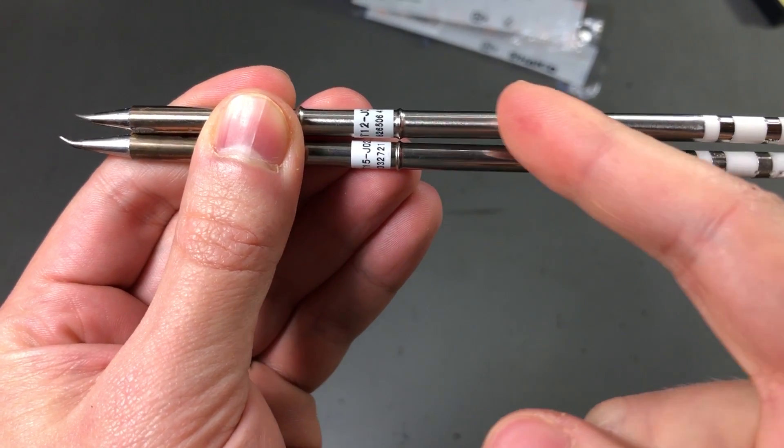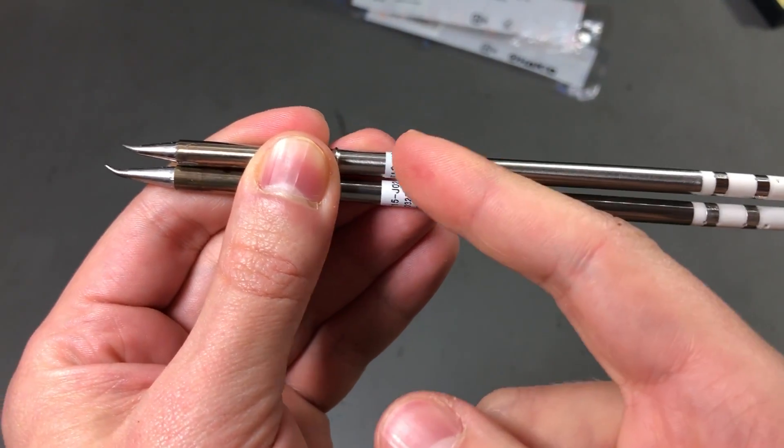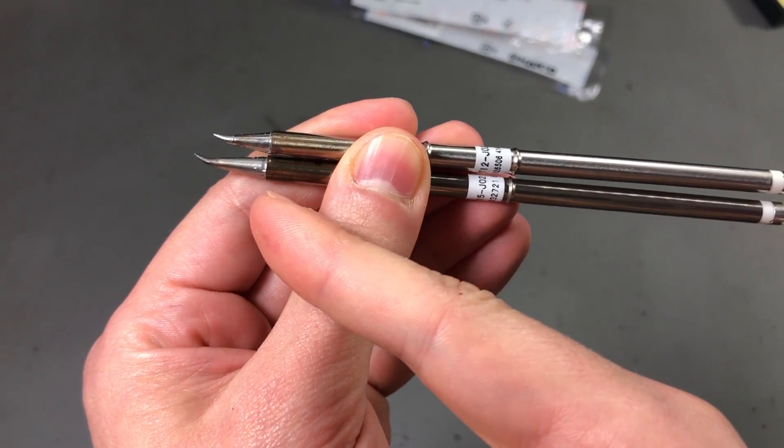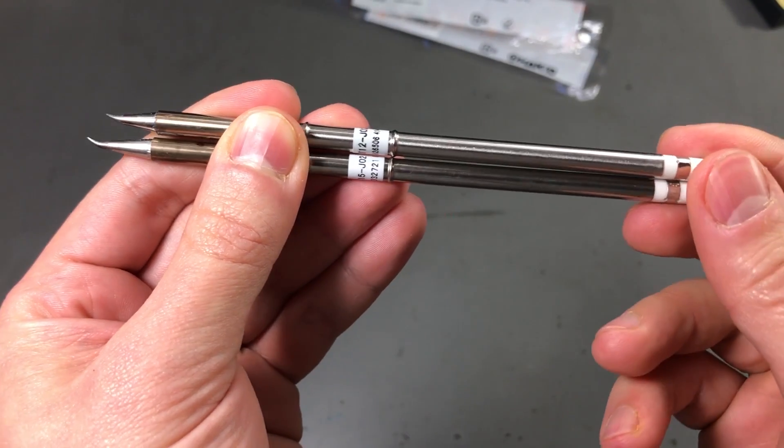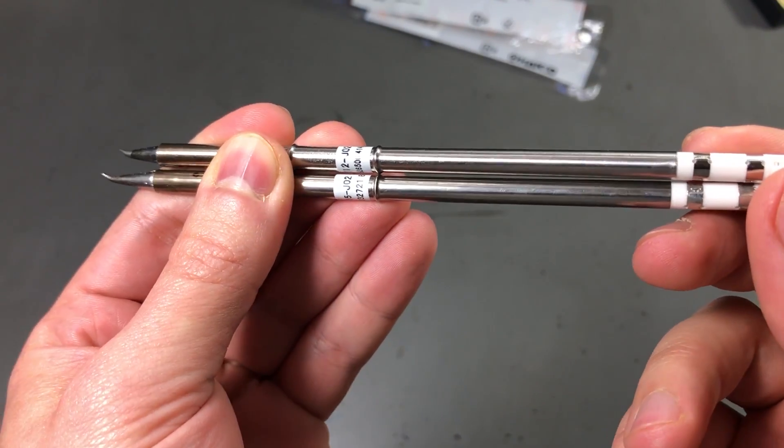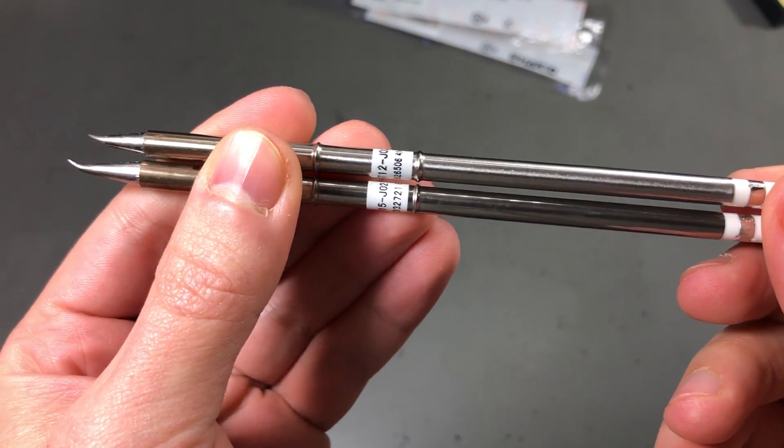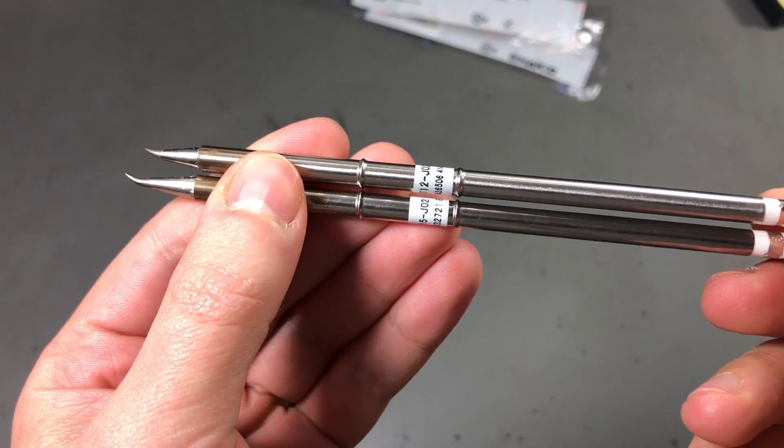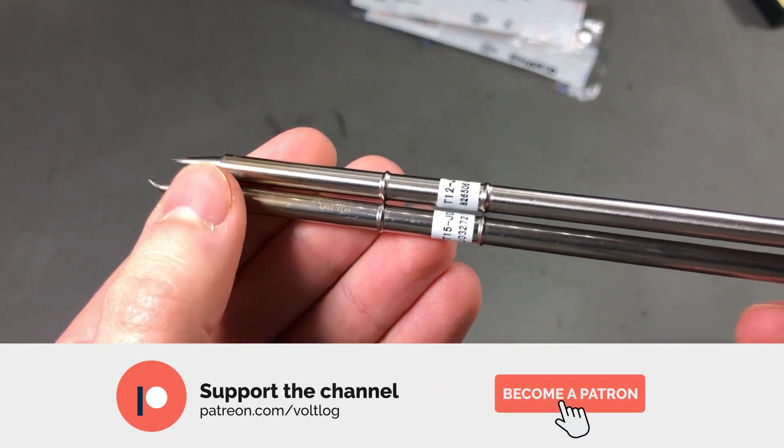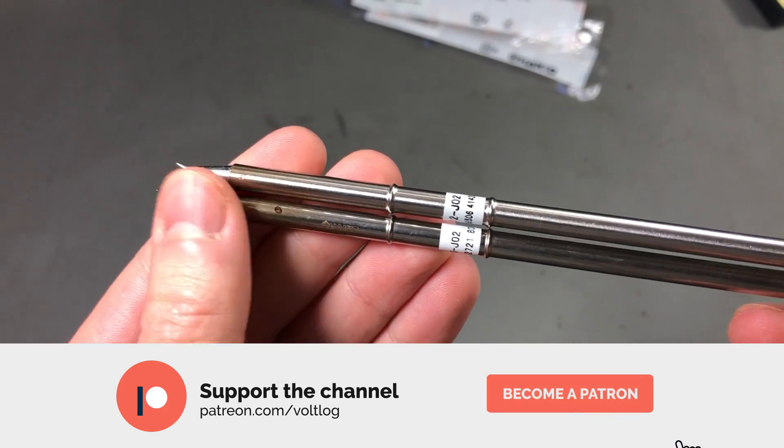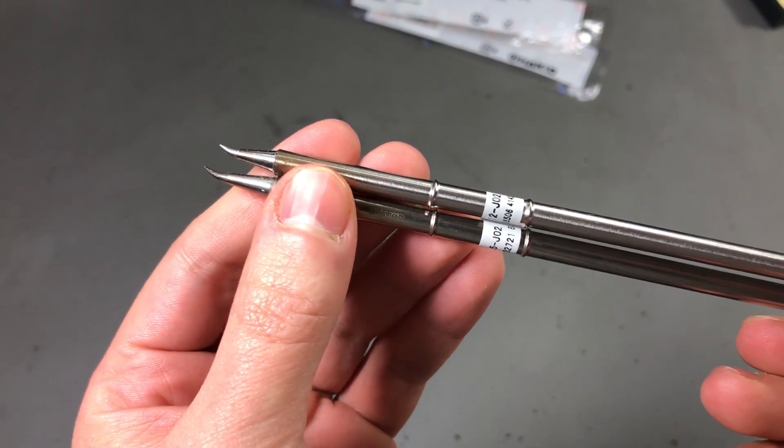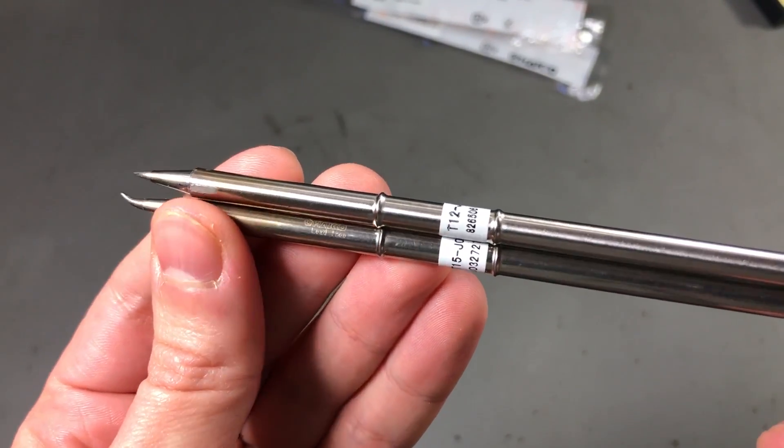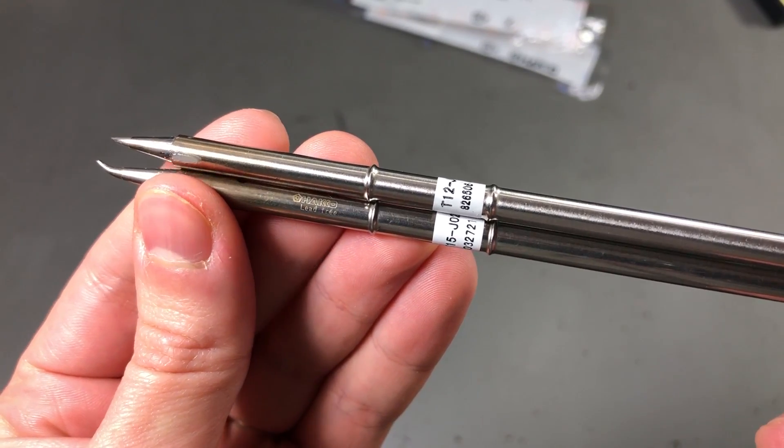Or should I say the T12 KSGR is 3mm shorter than the genuine tip. Both tips have about 1 hour of usage to allow some burn in so they can get up to full spec, so that's why you're seeing some discoloring here, it's because they've been running.